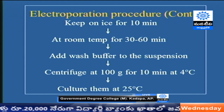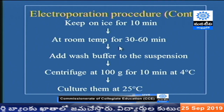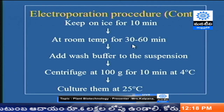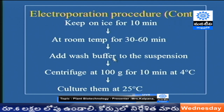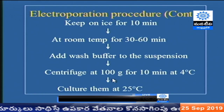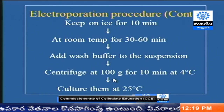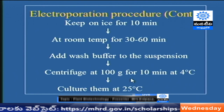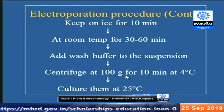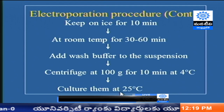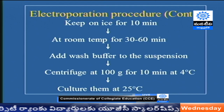After 10 minutes, the cells should be kept at room temperature for at least 30 to 60 minutes to improve cell survival. Then we wash the cell suspension, collect the protoplasts, and centrifuge at very low rpm for 10 minutes at 4 degrees centigrade. Once collected, the protoplasts are cultured at 25 degrees plus or minus 1 degree centigrade in the dark. That concludes electroporation.